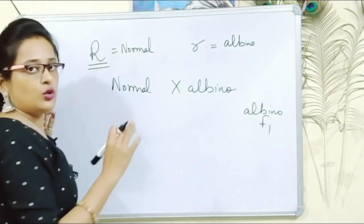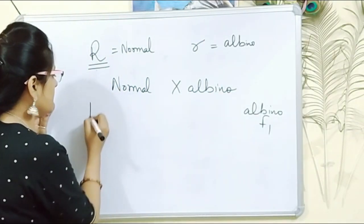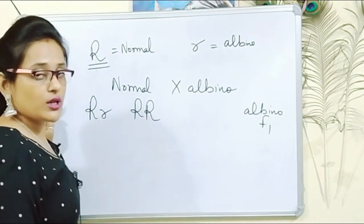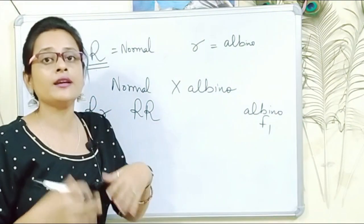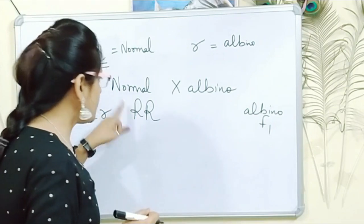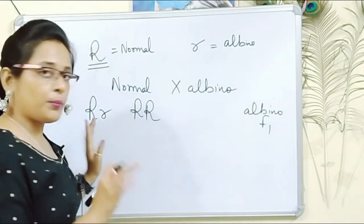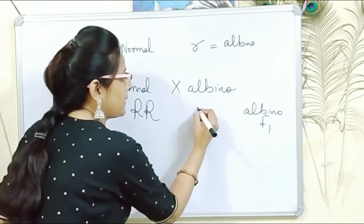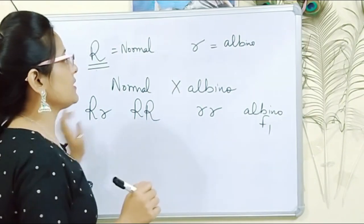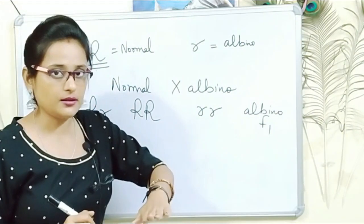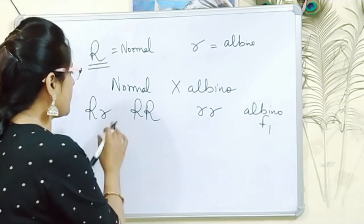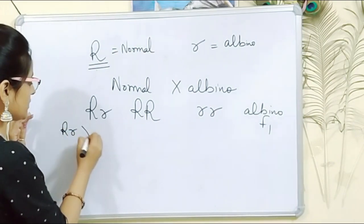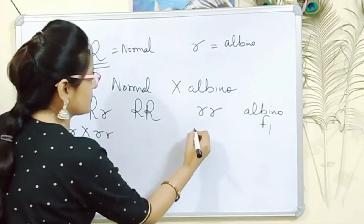The normal parent's genotype has two possibilities: it could be capital R small r (heterozygous) or capital R capital R (homozygous dominant), because we don't know from the question whether the normal parent is homozygous or heterozygous. The albino mouse's genotype can only be small r small r, because a recessive allele only expresses when in homozygous condition. So we have two chances for the normal parent and one for the albino, and we write both probabilities to find the exact answer.